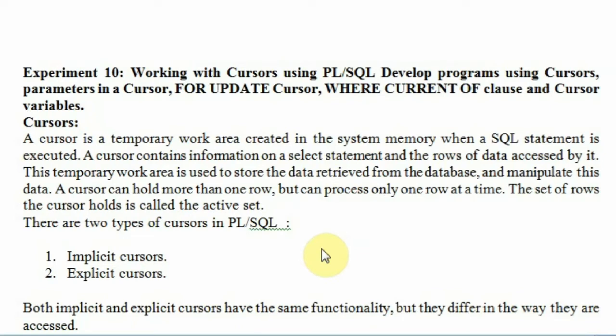This temporary work area is used to store the data retrieved from the database and manipulate it. For example, if I say 'select * from sailors', I will be getting all the information from the sailors table. This sailors table will be in this temporary area and internally the execution engine will process it and give the result. For instance, 'select * from sailors where sailors.rating > 5'.